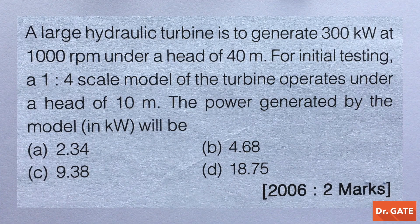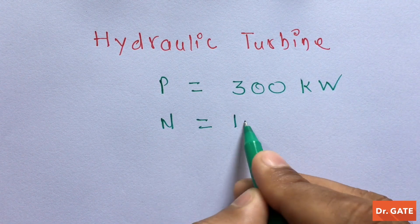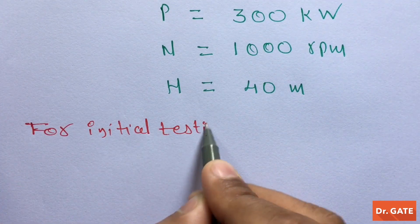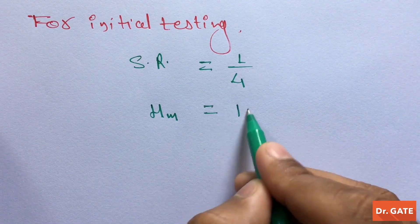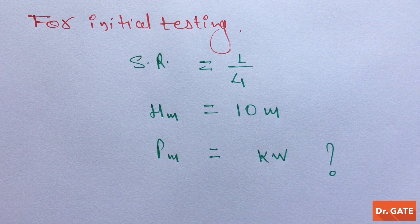A large hydraulic turbine is to generate 300 kW at 1000 RPM under a head of 40 meters. For initial testing, a 1/4 scale model of the turbine operates under a head of 10 meters. The power generated by the model is to be found. As per the question, scale ratio of 1/4 is taken and the model is operated at a head of 10 meters.